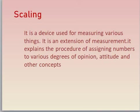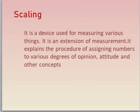Scaling can be done in two ways. The first is to make a judgment about some characteristics of an individual and then place them directly on the scale, and we can define in terms of that characteristic. The second way is that we prepare questionnaires in such a way that we have different scores on individual responses, and on those scores we can place them on the scale.